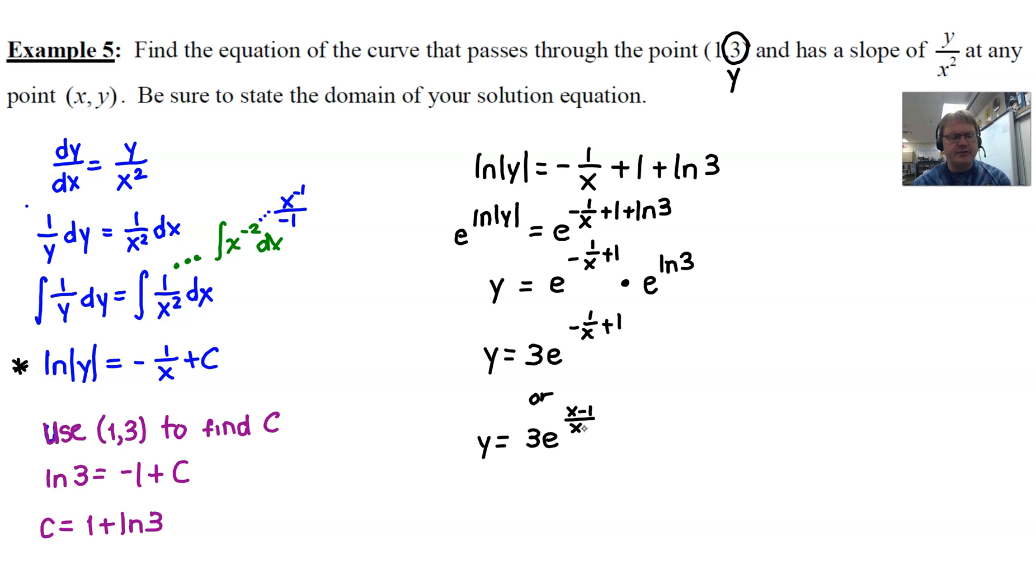Now, it says to state the domain of your solution equation. I just want to make sure that we understand that there could be some x's that just are no-no here, that we're not allowed to have. Seeing as how you have an x that's in that denominator, it's not a bad idea to state that this is probably not going to work really well if I have an x that's equal to 0. So let's safeguard against that. Now I wonder, could there possibly be maybe some other restrictions? Let's jump over to the graphing calculator and take another look at the solution of this differential equation.